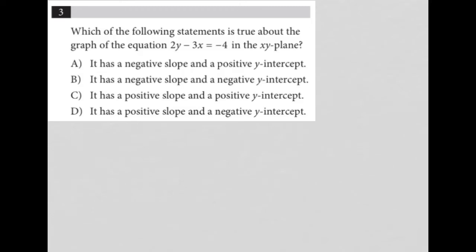So this question says, which of the following statements is true about the graph of the equation 2y - I'm going to just write that down - 2y minus 3x equals negative 4 in the xy plane? So a couple of things here.